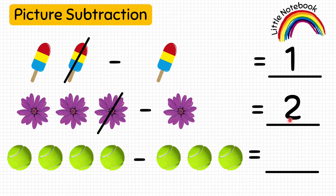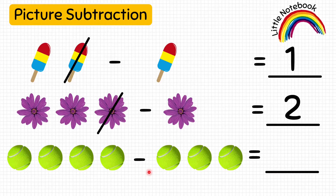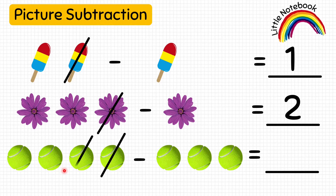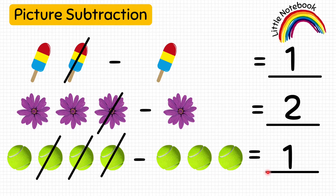Now let's move to another question: four balls minus three balls equals how many balls? You have four balls and you give three balls to your friend, so we will cross three balls. How many balls are you left with? You are left with only one ball, so let's write one in the blank. Four minus three equals one.